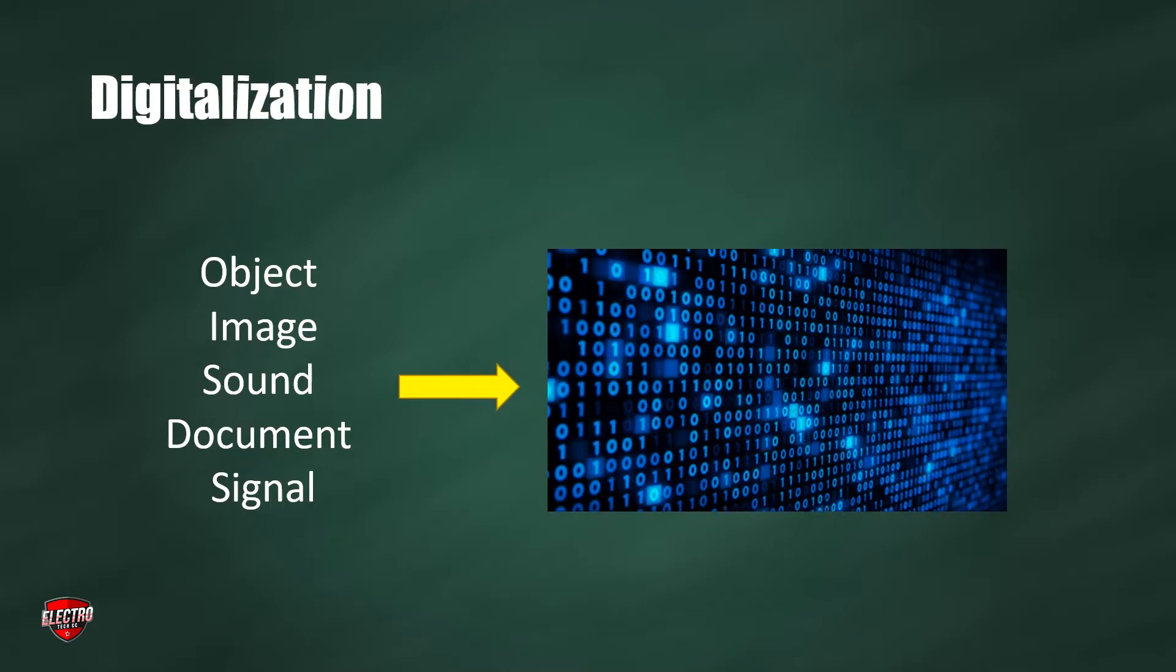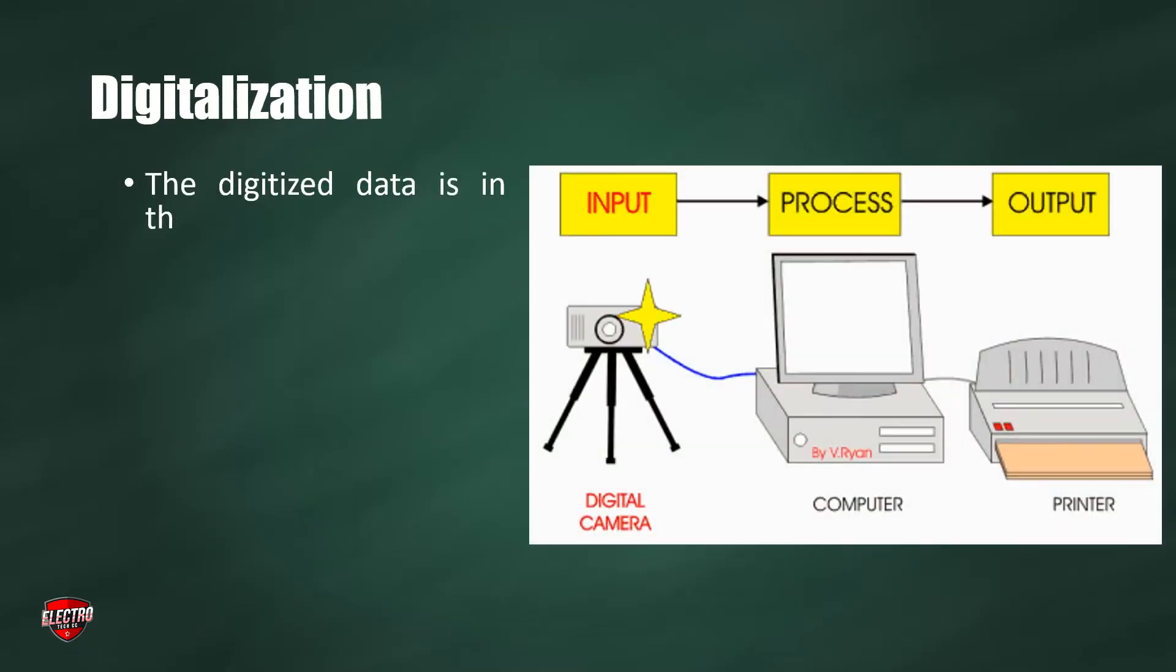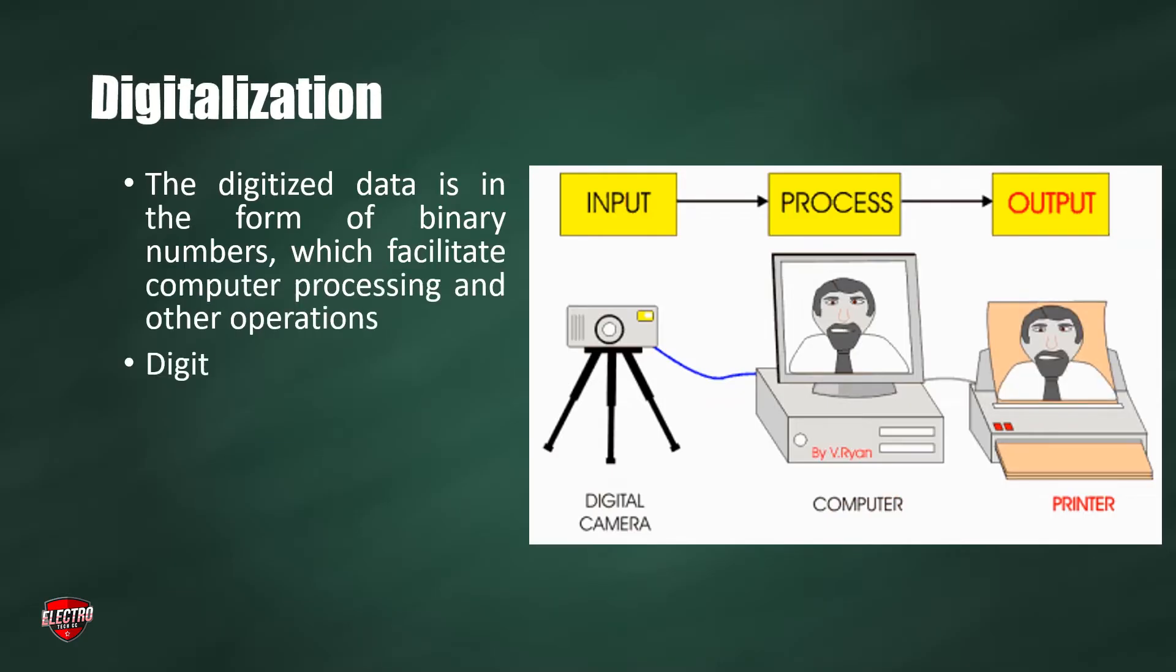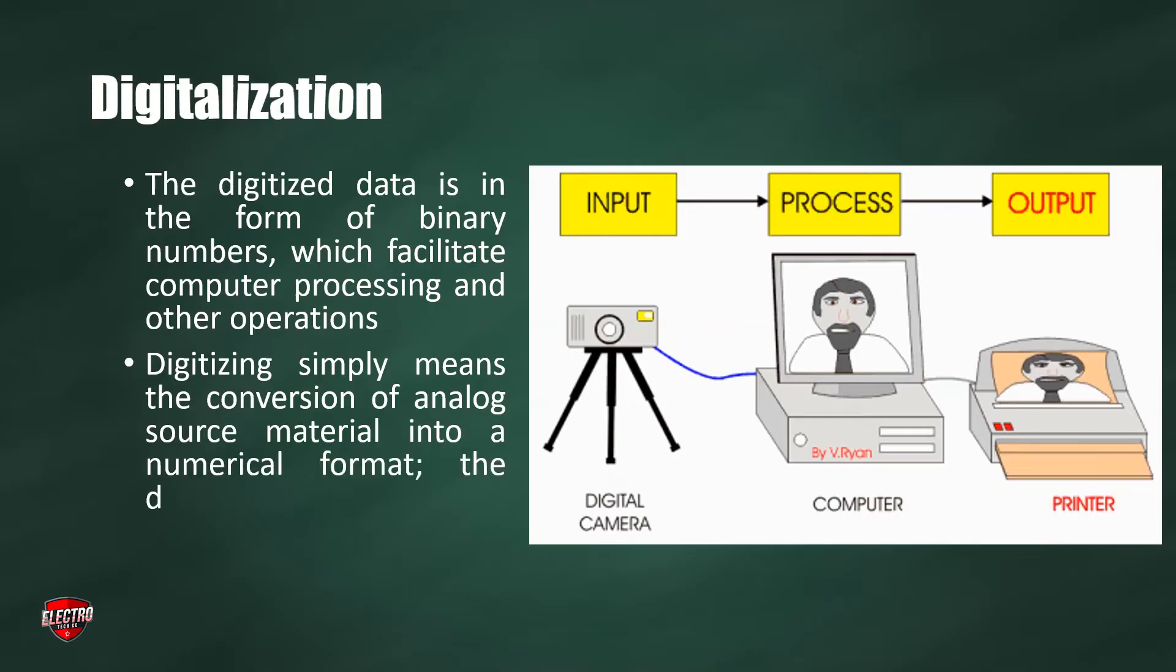The result is called digital representation, or more specifically digital image for the object and digital form for the signal. In modern practice, the digitalized data is in the form of binary numbers which facilitate computer processing. Digitalizing simply means the conversion of analog source material into a numerical format, the decimal or other number system.